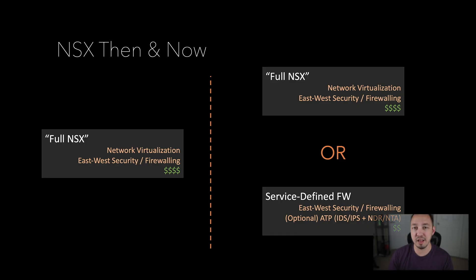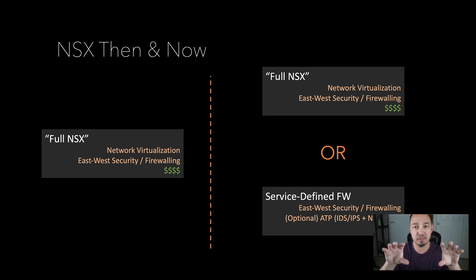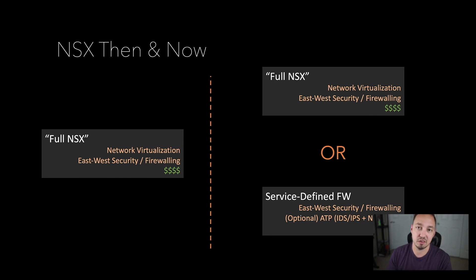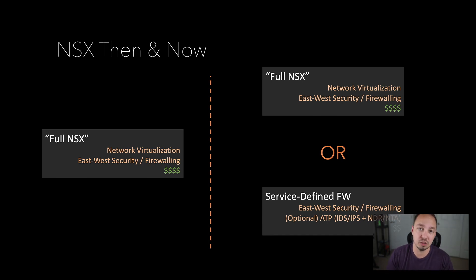The other option is called ATP, which is an add-on to that SKU and gives you access to IDS and IPS, as well as Network Detection and Response, Network Traffic Analysis — all under the umbrella of a recent VMware acquisition called Lastline. To summarize: Service Defined Firewall gives you two options — Distributed Firewall only, or Distributed Firewall plus IDS/IPS and the Lastline components integrated as well. The price is where things get really interesting — this is a lot cheaper than the full NSX experience. So if you evaluated NSX and said it's too expensive for a security-only use case, this is something you should absolutely be looking at right now.